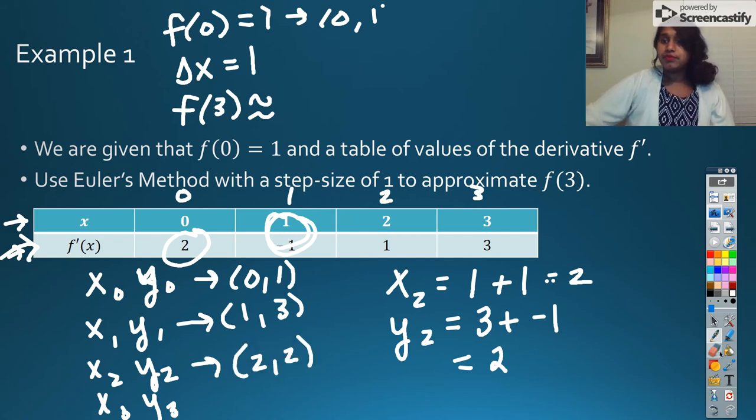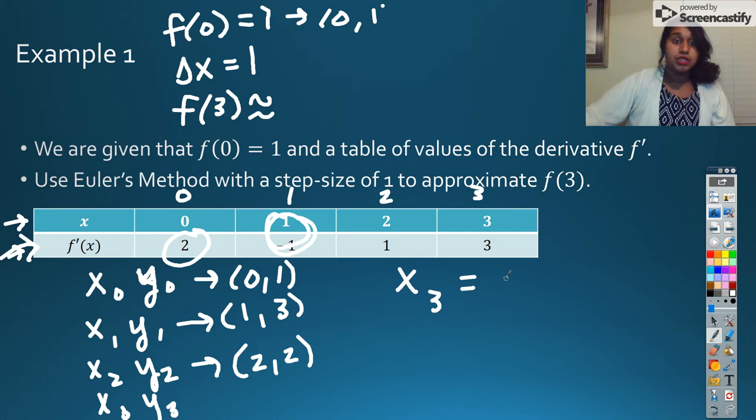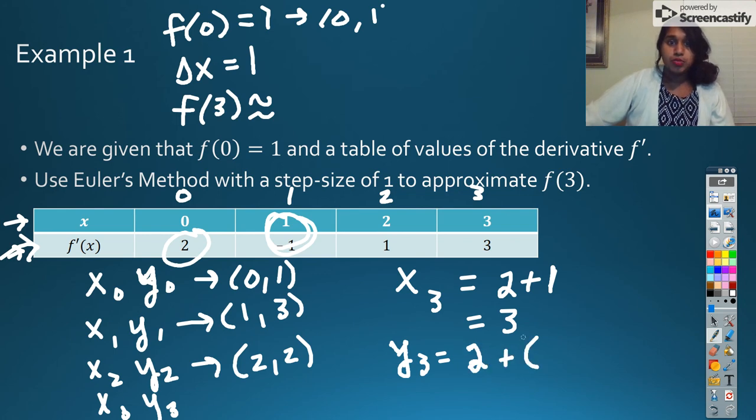So now we have another coordinate point at (2, 2). And our final spot, which should get us to our answer, our approximation of F(3), is X3 is going to be equal to X2, so 2 plus 1, which is our change, our delta, our step size, which is just 3. And our Y3 is going to be equal to our previous Y plus the slope at that point is 1. 1 times 1 is 3, or 2 plus 1 is 3. So that means we have a point at (3, 3). And that's our answer. Our end approximation, F(3), is approximately 3. And that is our answer.